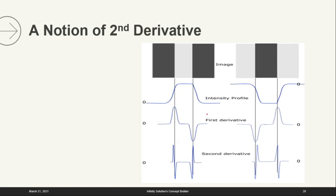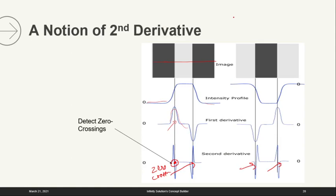Is it possible to find edges with the second derivative? Yes. Here the intensity is low, then high, then low again. The first derivative looks like this, and if we take the derivative again, to detect edges we just need to find the zero crossings. Laplacian is nothing but the second derivative. So you can detect edges either by the first derivative or the second derivative — we just detect the zero crossings.